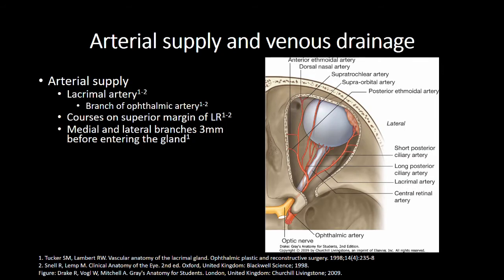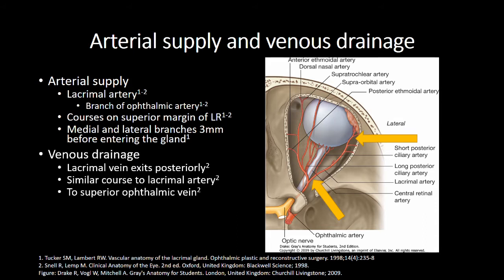The gland's arterial blood supply is through the lacrimal artery, a branch of the ophthalmic artery arising near the orbital apex. From its origin, it follows the superior margin of the lateral rectus to reach the lacrimal gland. Approximately 3mm before entering the gland, the artery splits into medial and lateral branches. Venous drainage is through the lacrimal vein, which exits the gland posteriorly and follows a similar course to the lacrimal artery to drain into the superior ophthalmic vein.